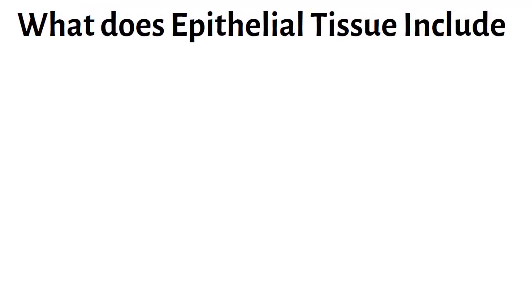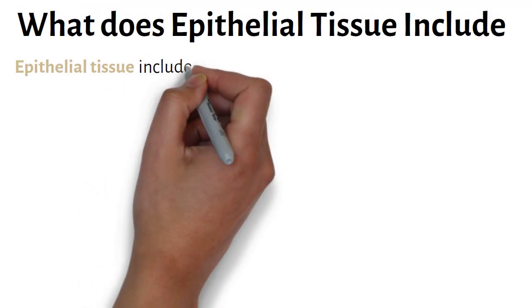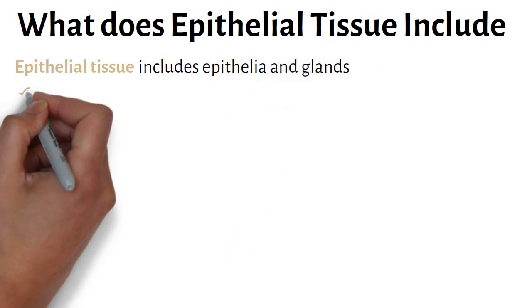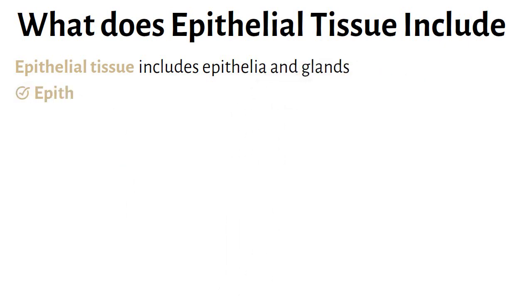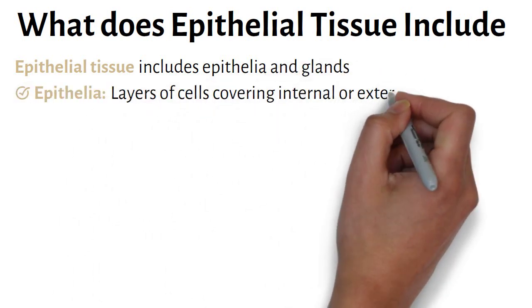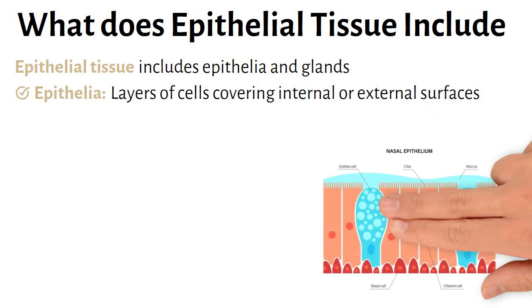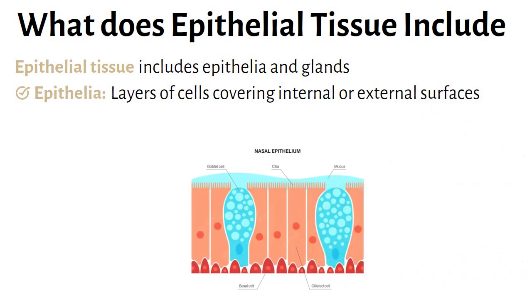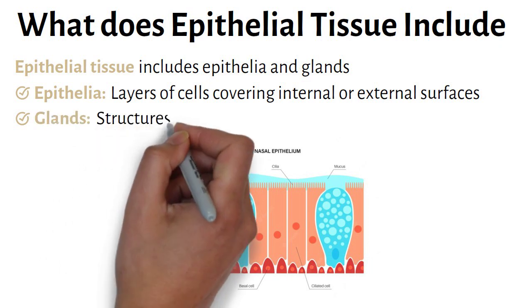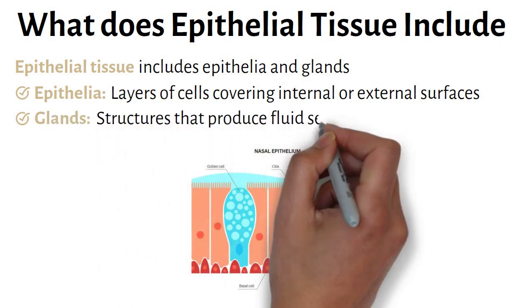What does epithelial tissue include? Epithelial tissue includes epithelia and glands. Epithelia are defined as layers of cells covering internal or external surfaces. Epithelia is the plural form of the word epithelium. Glands are structures that produce fluid secretions.